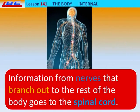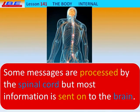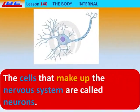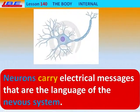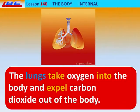Information from nerves that branch out to the rest of the body goes to the spinal cord. Some messages are processed by the spinal cord, but most information is sent to the brain. The cells that make up the nervous system are called neurons. Neurons carry electrical messages that are the language of the nervous system.